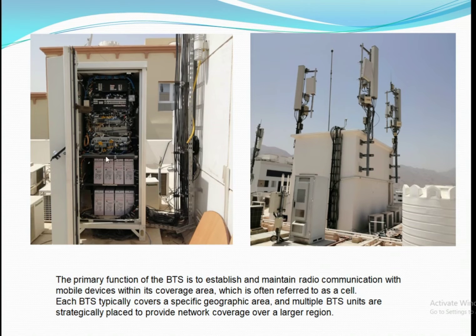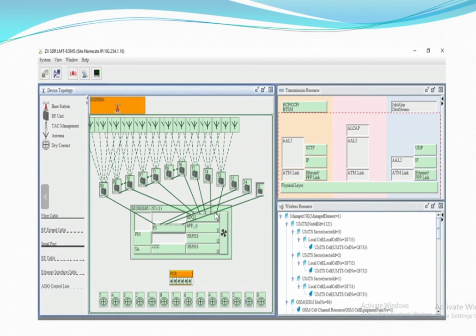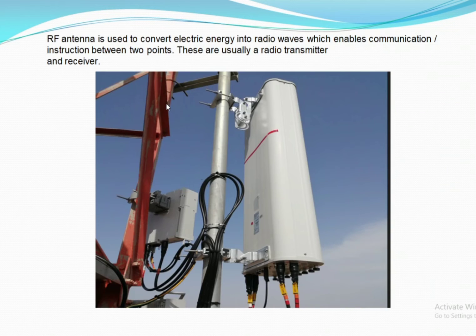This BBU diagram is a complete demonstration of a site where three sectors are installed, providing connectivity to multiple BTS in a cell site. The next part is a software demonstration of the radio remote unit connected via fiber optic cables. The dotted line shows the RRU connected with the antenna, visible in the ZTE LMT software used for ZTE vendor equipment.